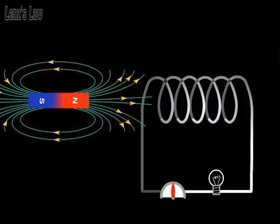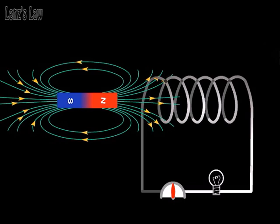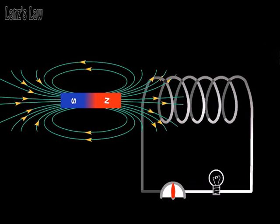Lenz's law helps us to find the direction of the induced current in a loop when it is placed in a magnetic field which is changing.